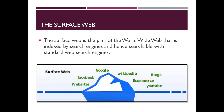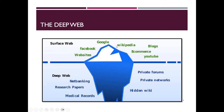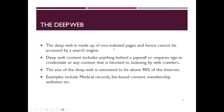On the surface web we have things like Facebook, websites, Google, etc. Going a little deeper, we have the deep web, with examples like research papers and medical records — things that should not be publicly accessible. The deep web is made up of non-indexed pages and cannot be accessed by a search engine. Deep web content includes anything behind a paywall, requiring sign-in credentials, or blocked by web crawlers. The deep web is estimated to be above 90% of the internet, with examples including medical records, fee-based content, and membership websites.